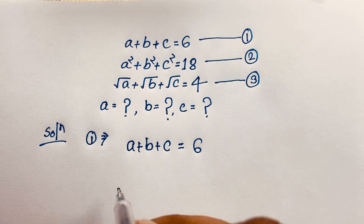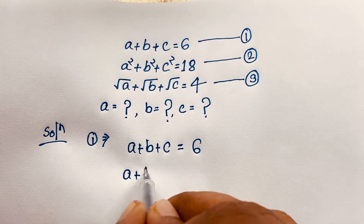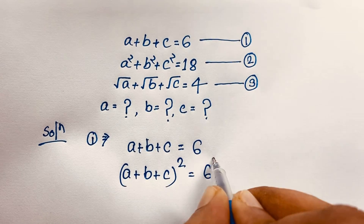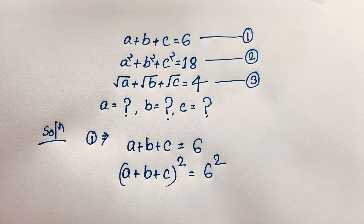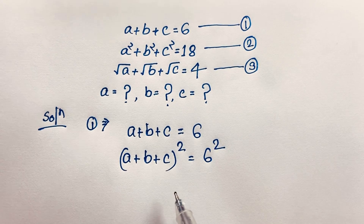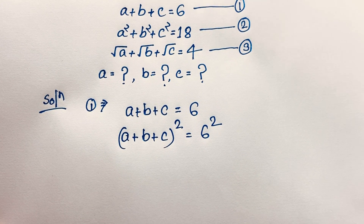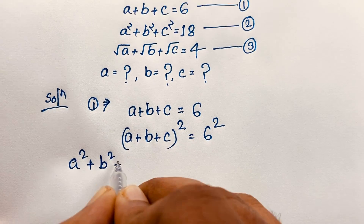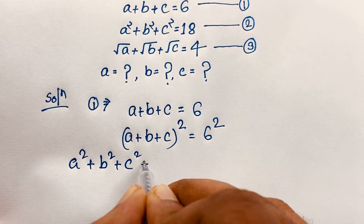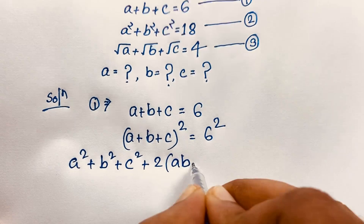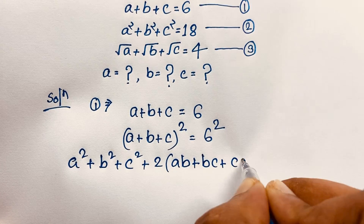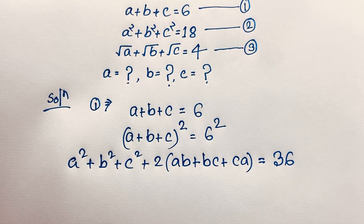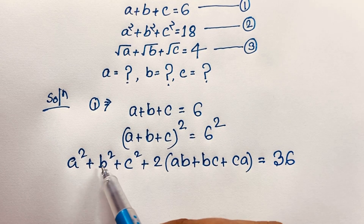Then I use both sides whole square, so it will be (a plus b plus c) squared is equal to 6 squared. I use both sides whole square, so according to this identity we know that (a plus b plus c) squared equals a squared plus b squared plus c squared plus 2 times (ab plus bc plus ca) is equal to 36.